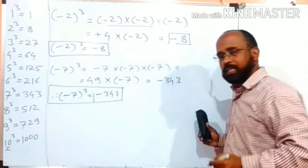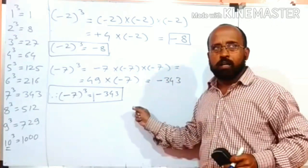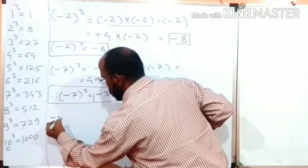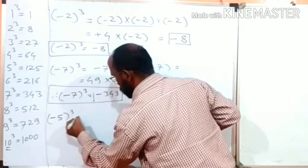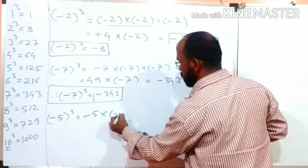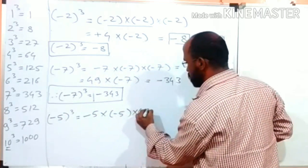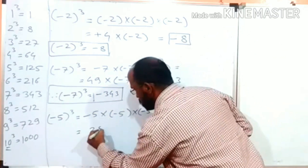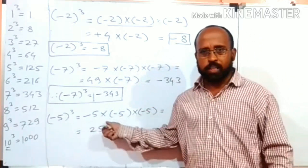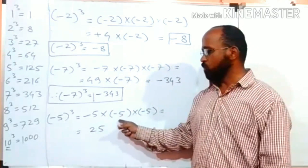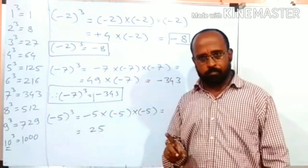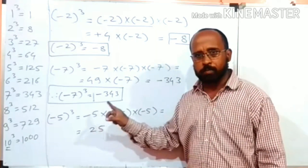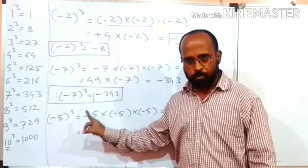One last example is enough for you to understand the pattern of cubes of negative numbers. Minus 5 cubed is equal to minus 5 into minus 5 into minus 5, three times. Which is equal to: 5 fives are 25. The symbol of the answer is minus times minus, which is plus. If the symbol of both numbers is the same, the symbol of the answer is always positive. So positive 25.